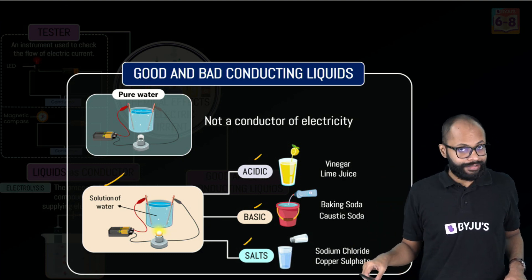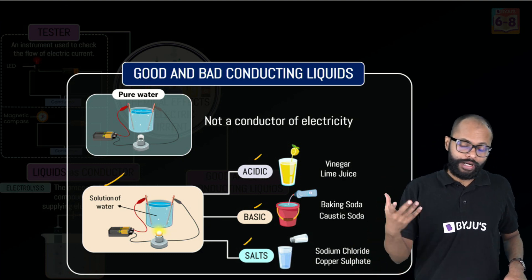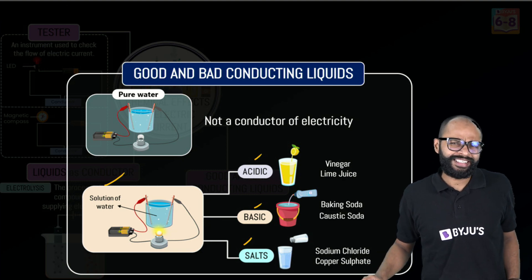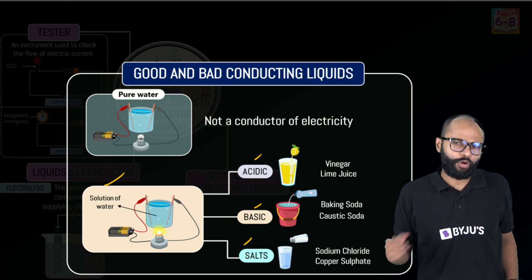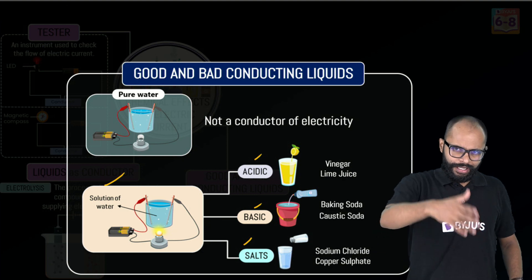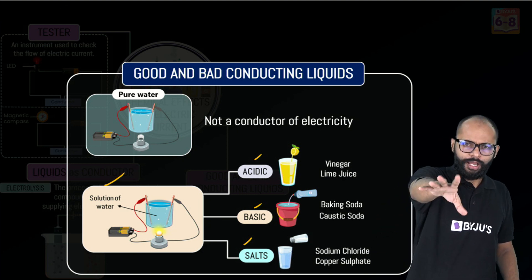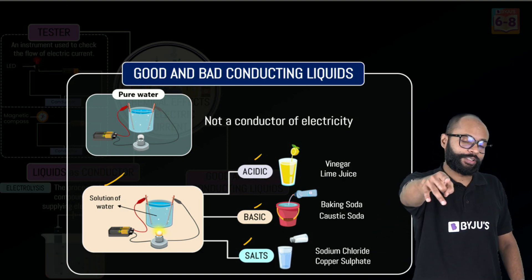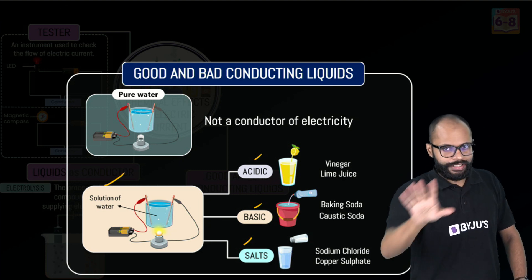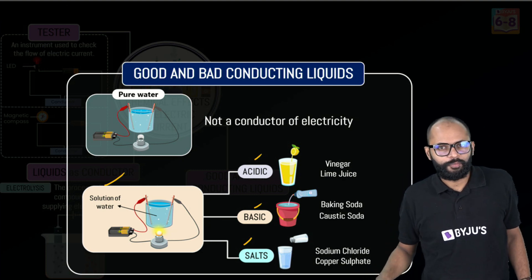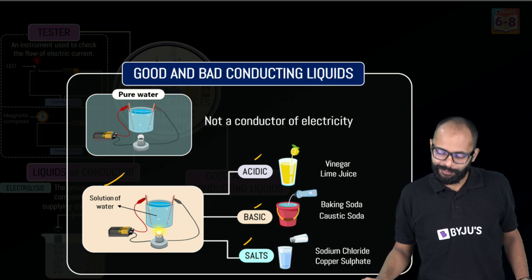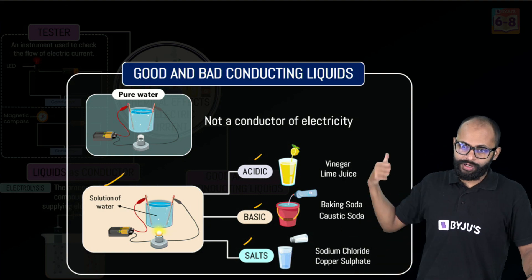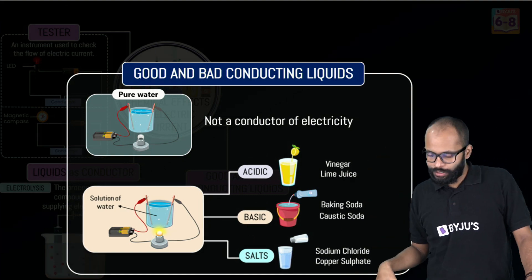We can also add salts, for example copper sulphate. But what about sugar? Tell me in the comment section — can sugar make water conduct electricity? If those kids who have been regular in the one-shot session are listening, you can help each other out. These are the three types of impurities we can add to make water conduct.